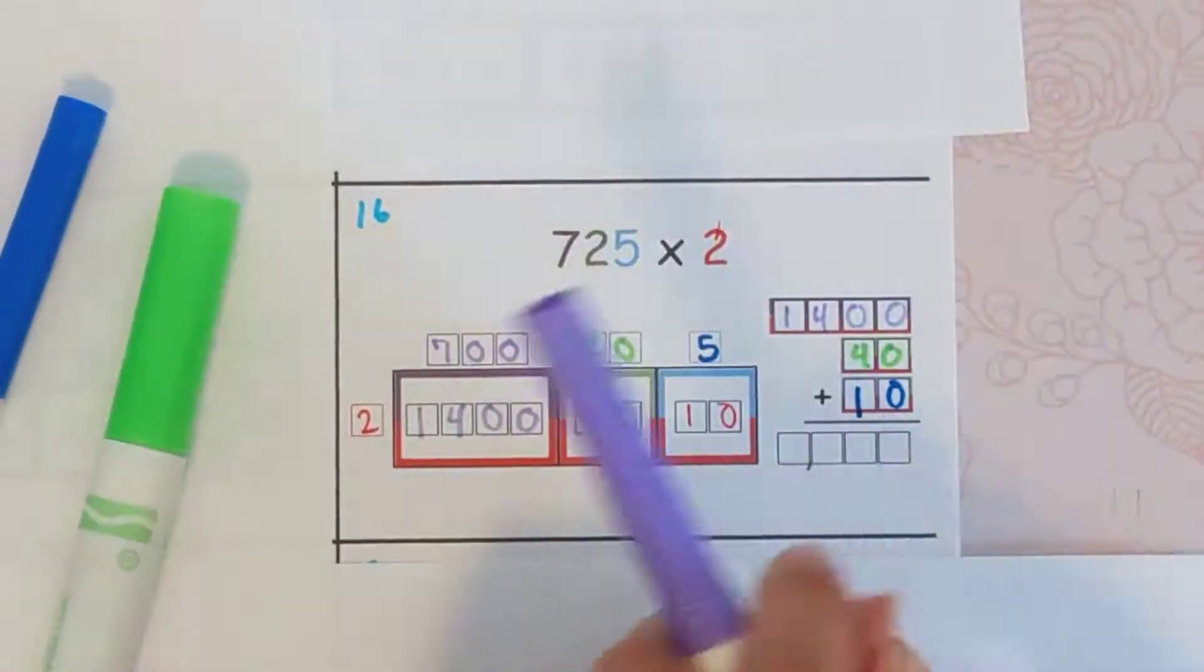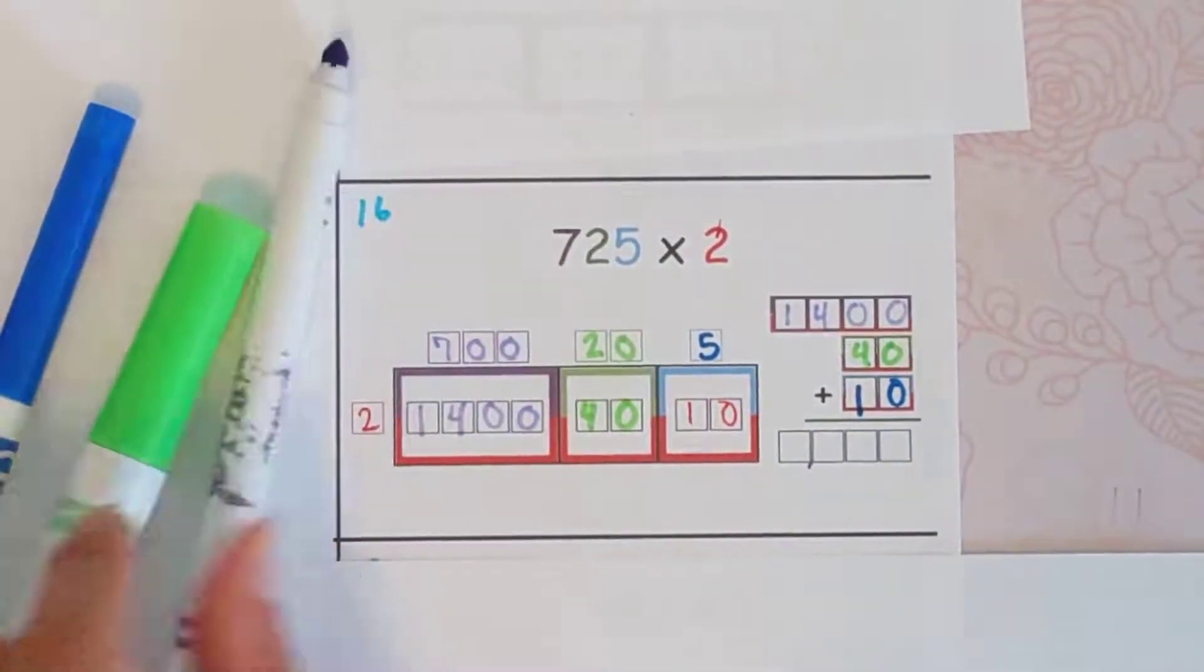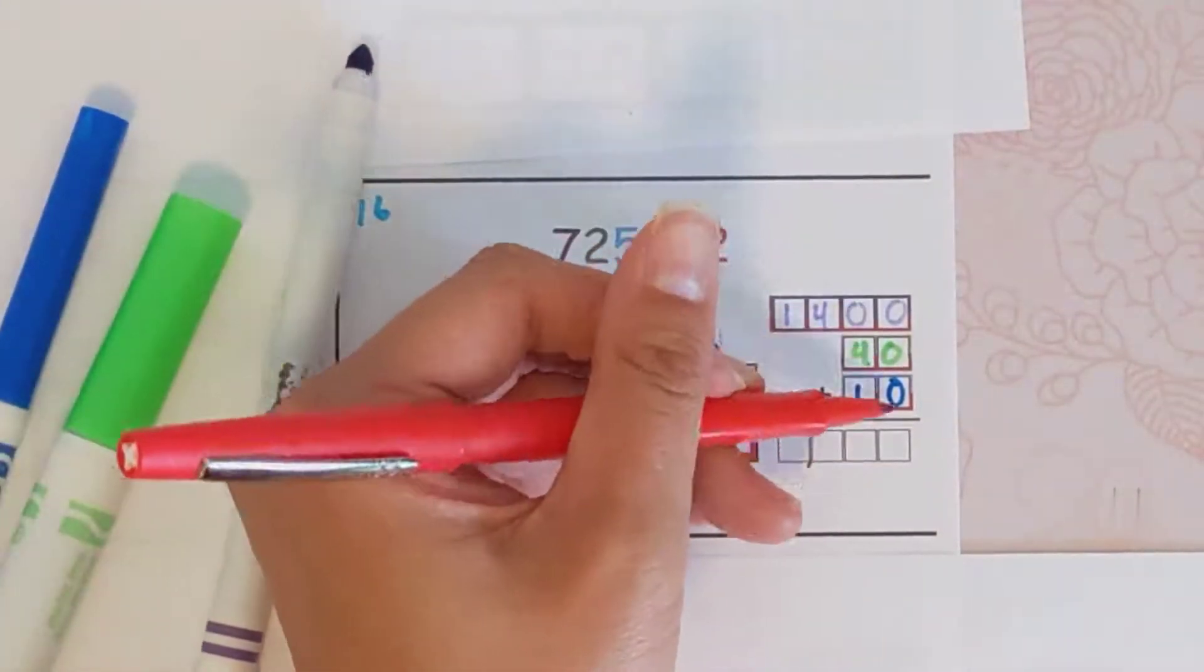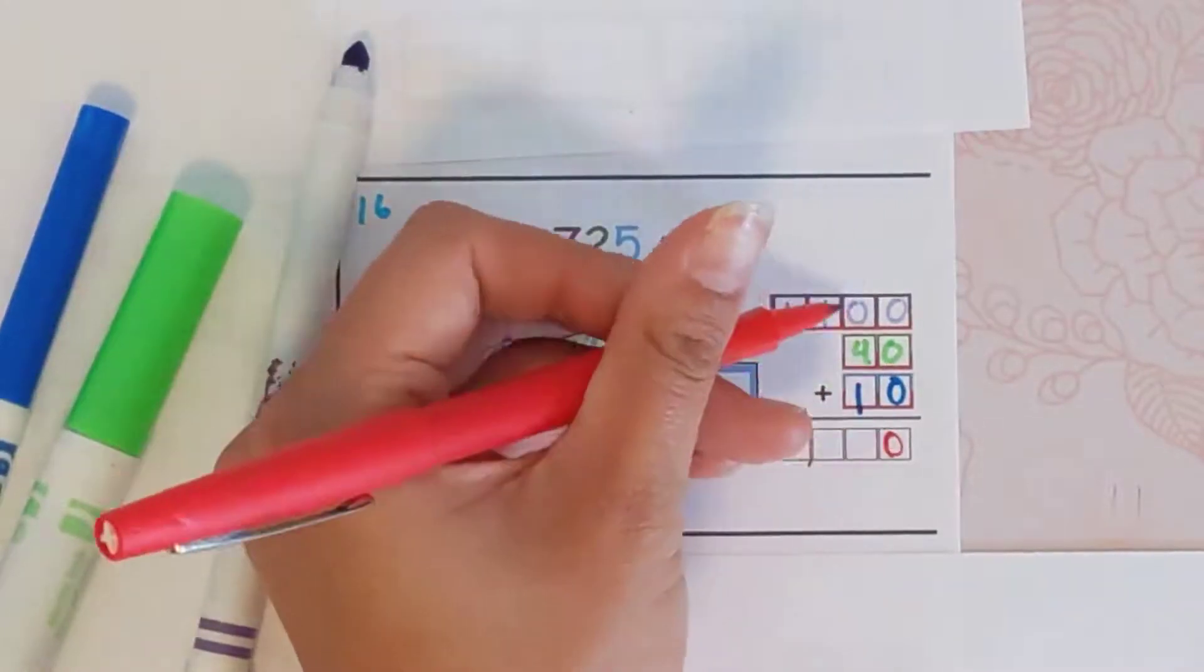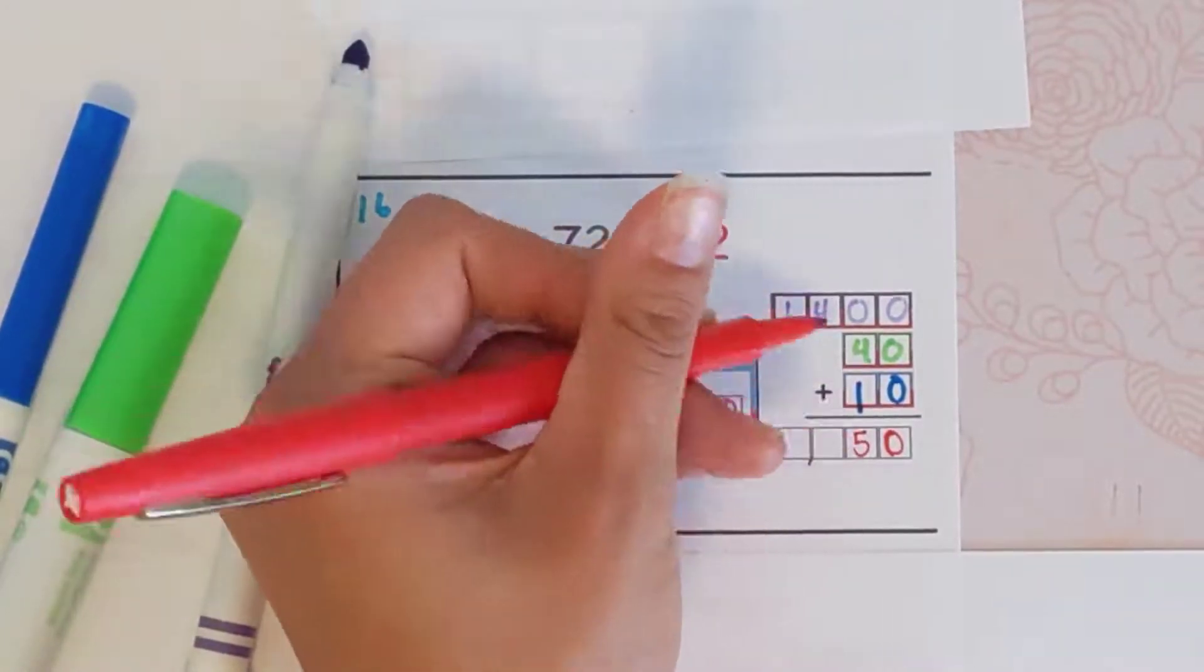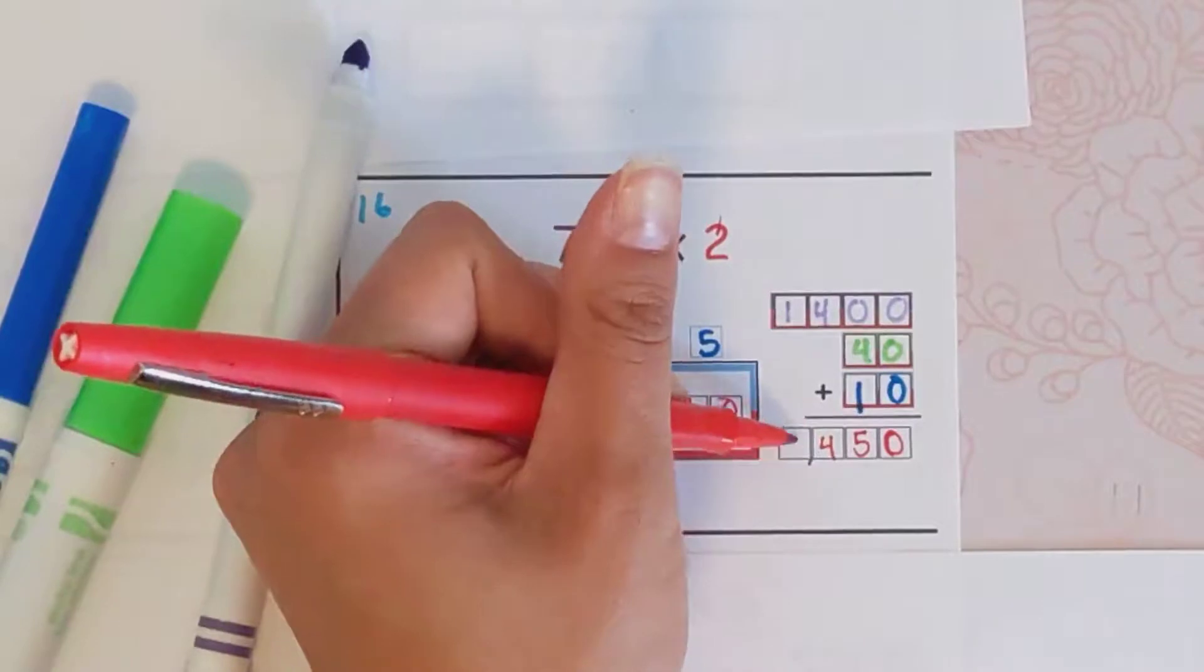You're just going to add them all together, so 1,400 plus 40 plus 10. 0 plus 0 plus 0 is 0. 0 plus 4 plus 1 is 5. 4 plus nothing is 4. And 1 plus nothing is 1.